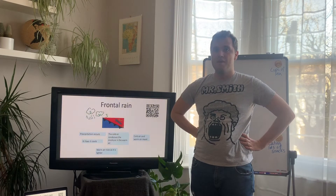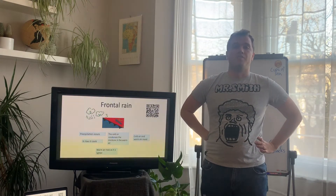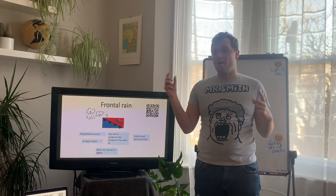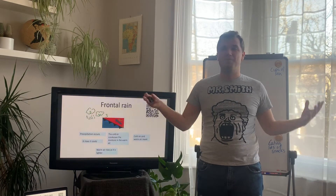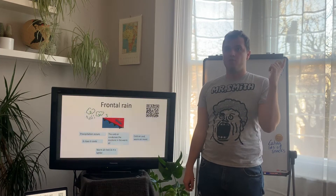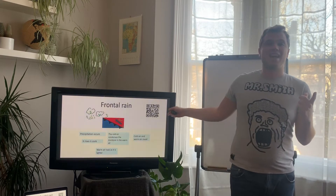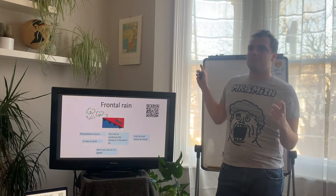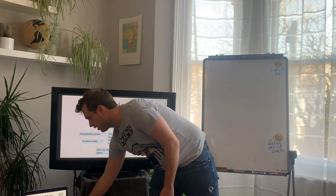Frontal rainfall has more to do with our global atmospheric circulation and bands of warm and cold air. Towards the south of the UK we have massive bands of warm air, and towards the north we have massive bands of cold air. I want you to pause your screen and scan the QR code to watch the video — it's a bit of a vintage one but it explains it perfectly. Do that now and then we'll come back together.